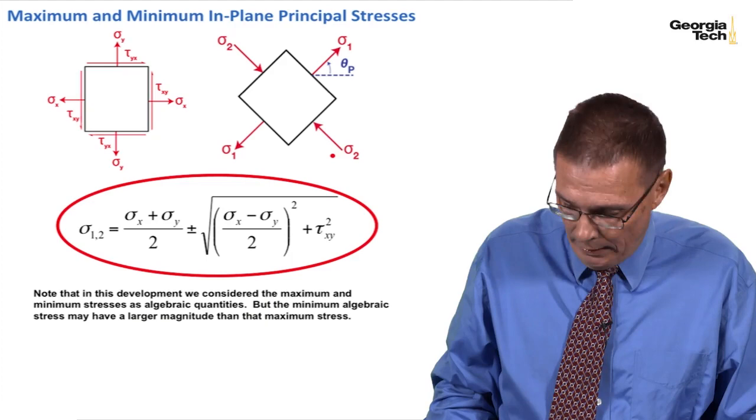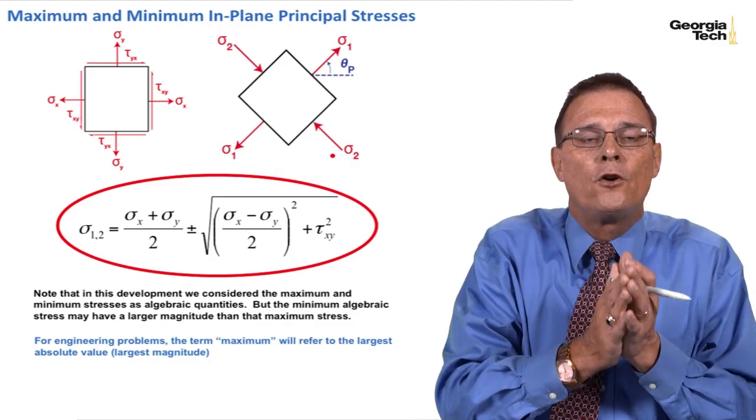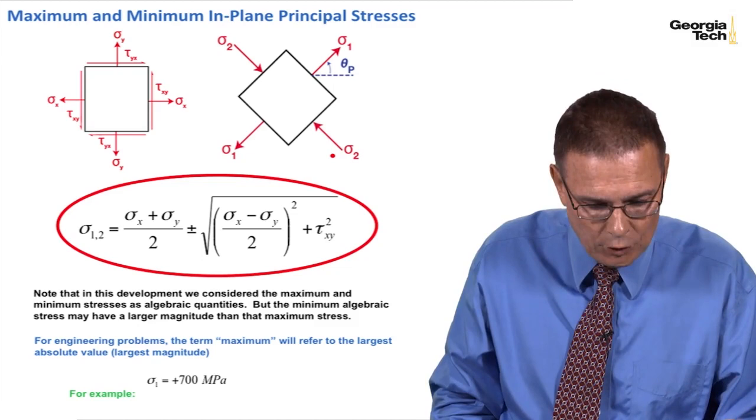But in our calculations for our engineering problems when we use the term maximum we're going to refer to the stresses with the largest absolute value or the largest magnitude. And so for example, I have sigma sub 1 maybe is 700 megapascals.